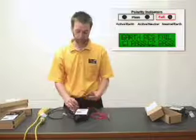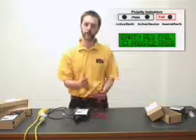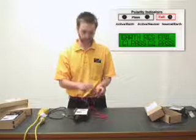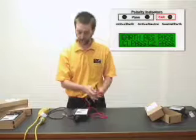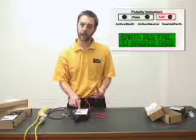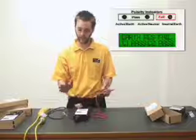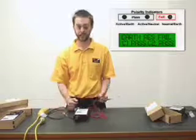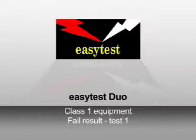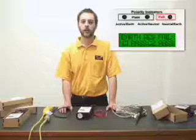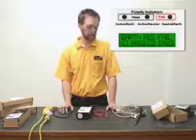Now the next step is to test for earth continuity by using this external probe and touching it to any external metal on the appliance. The result is displayed instantly at the top of the LCD display. And that's it, that's how easy it is. Now I will do the same test again using another class one earthed equipment, another soldering iron which I know has a fault built into it.